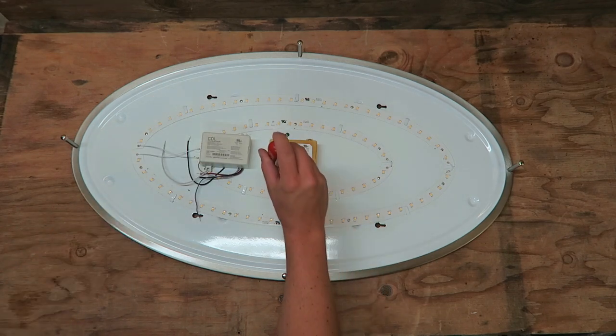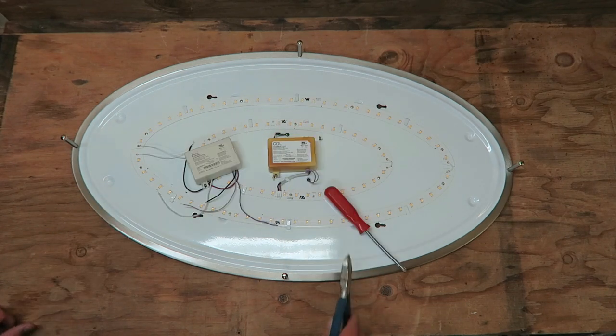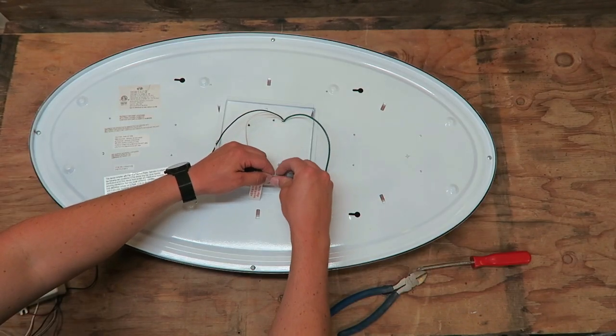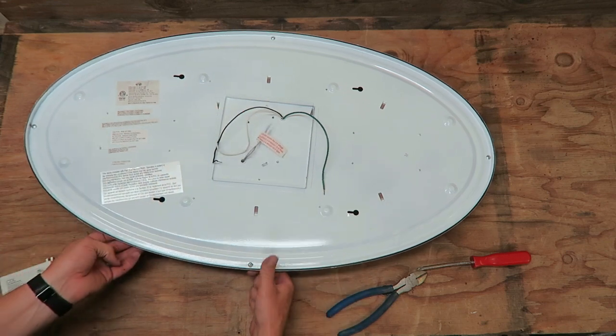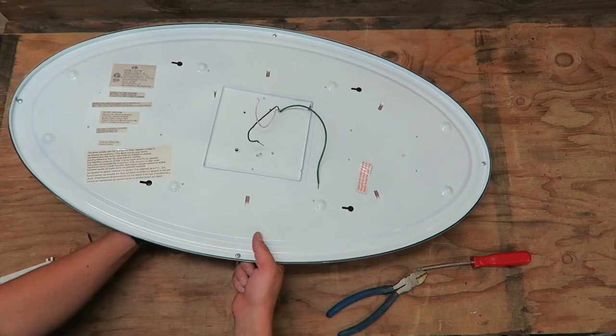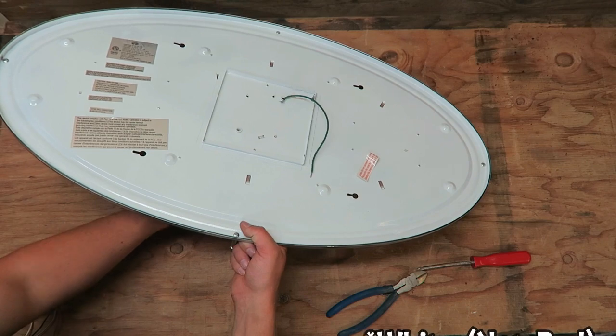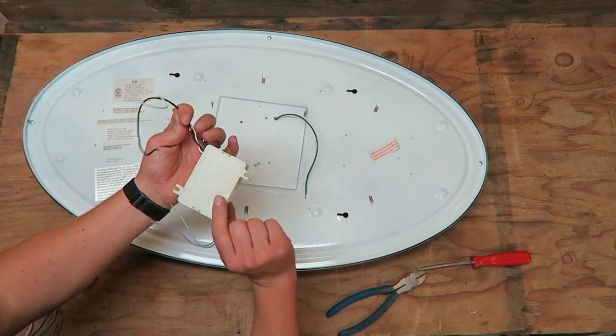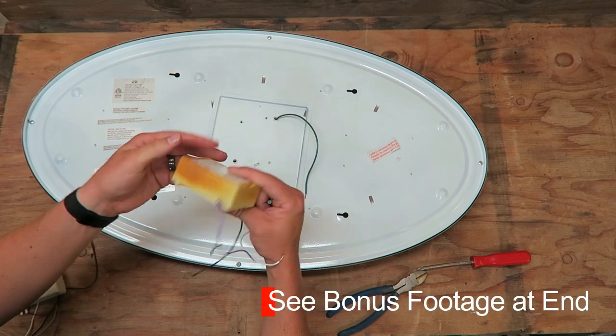We've got two screws that hold the driver in, so we'll remove those. We'll go ahead and snip this red and black wire, the purple and gray which are for the dimmer. So we can pull that purple and gray through as well as the red and black. Now this unit is completely detached. Maybe after we're done, we'll tear this apart and see what's inside.